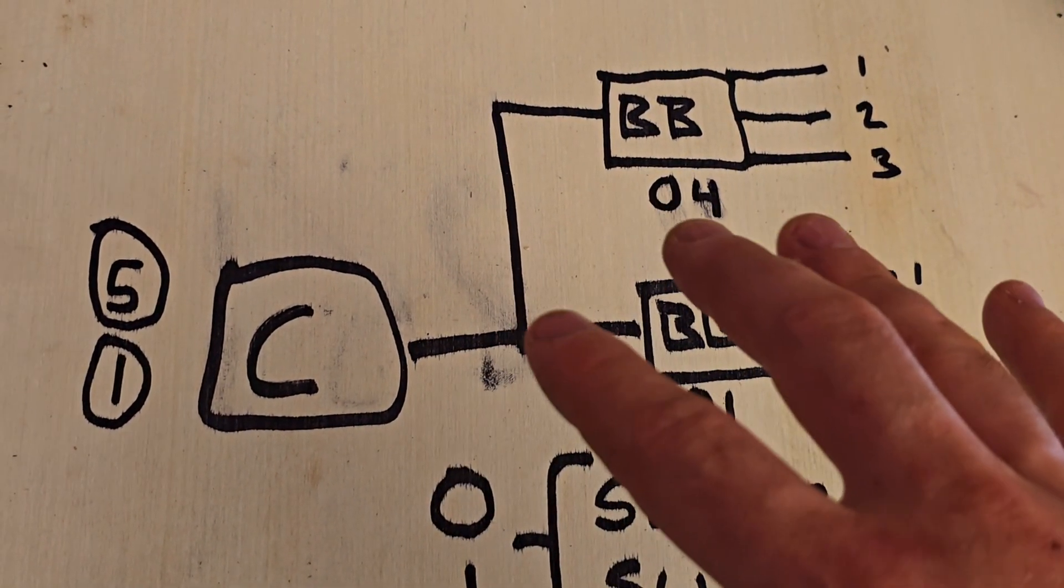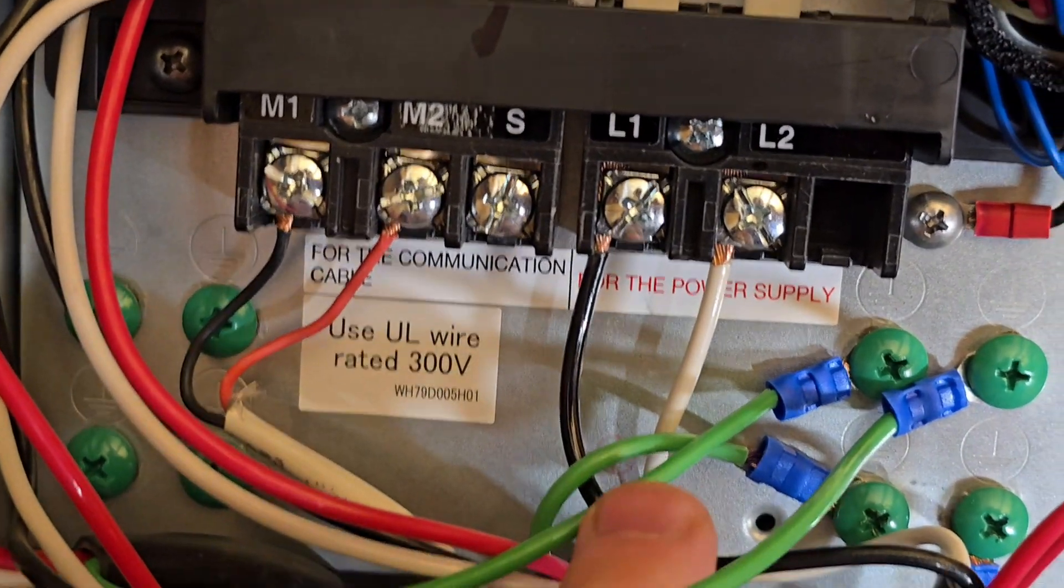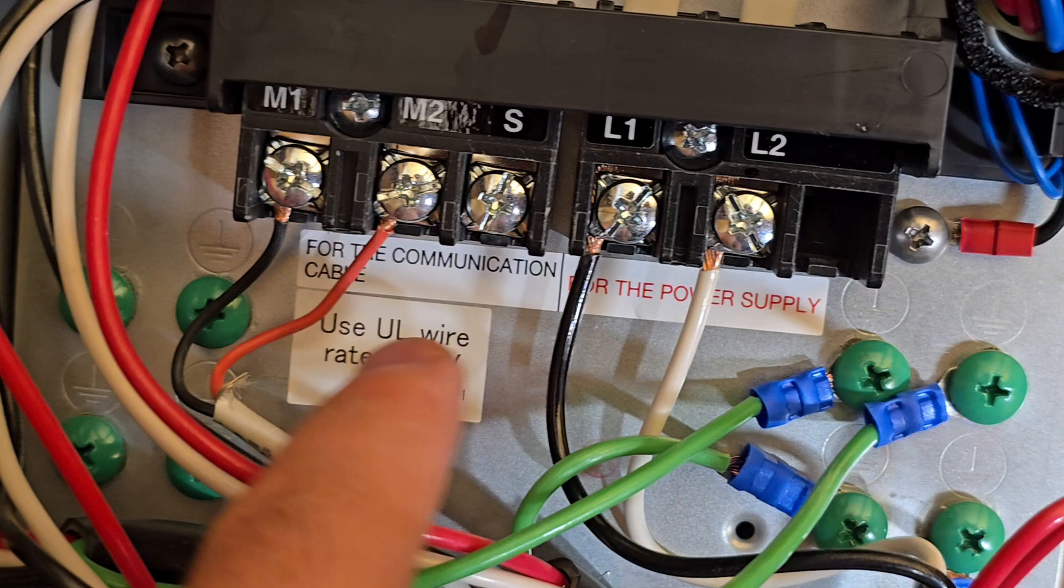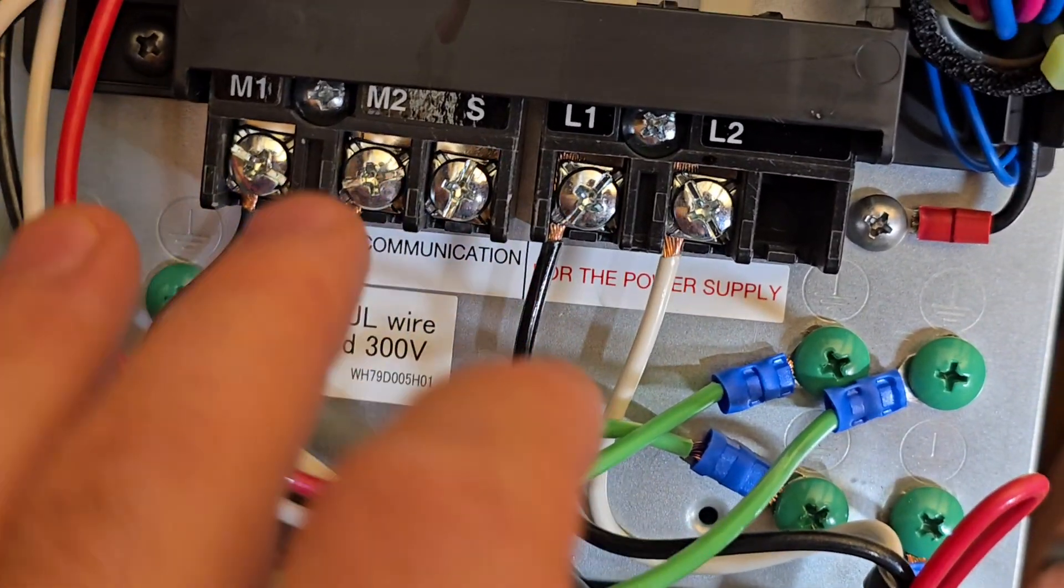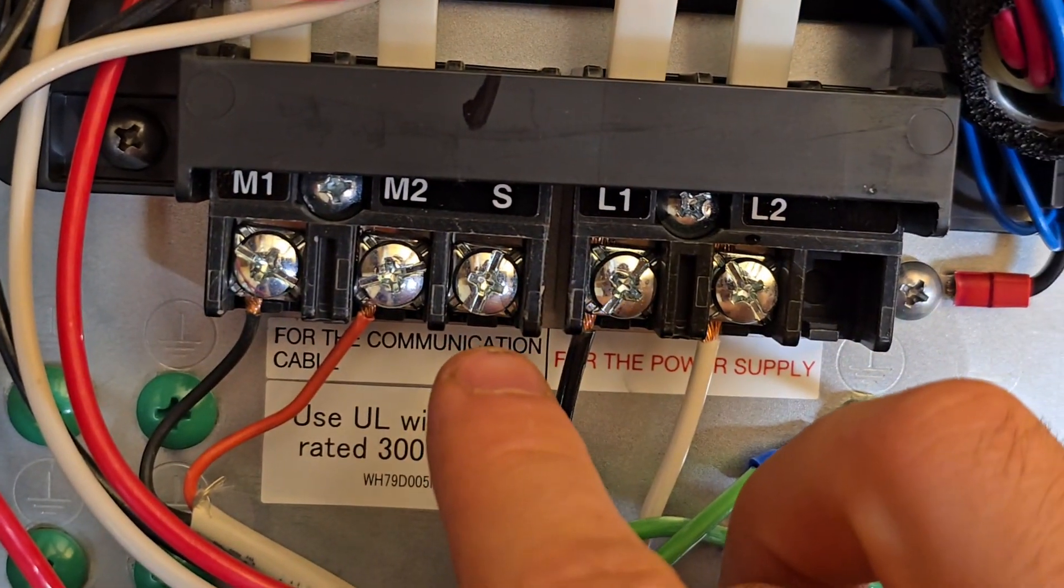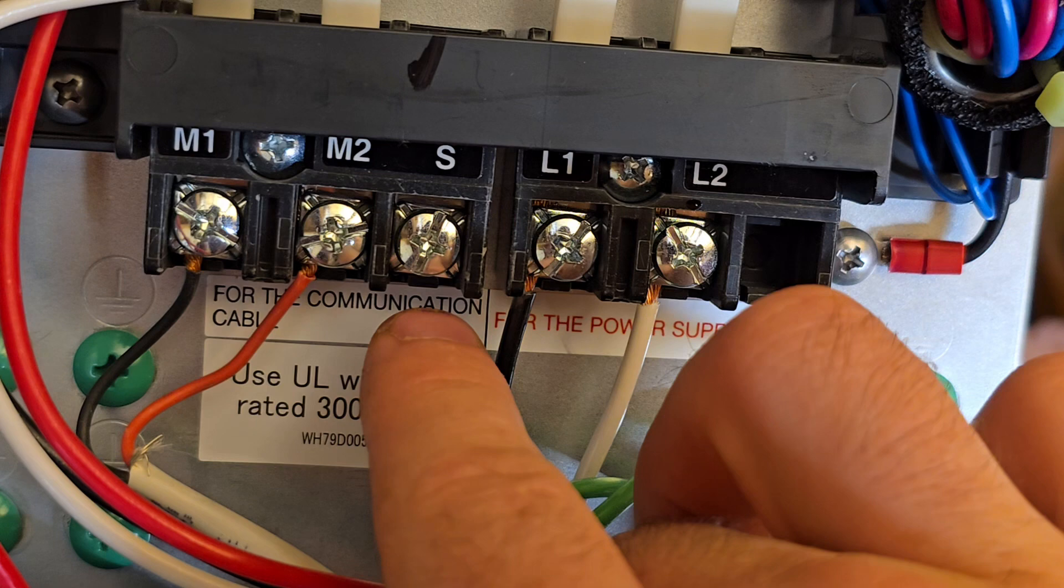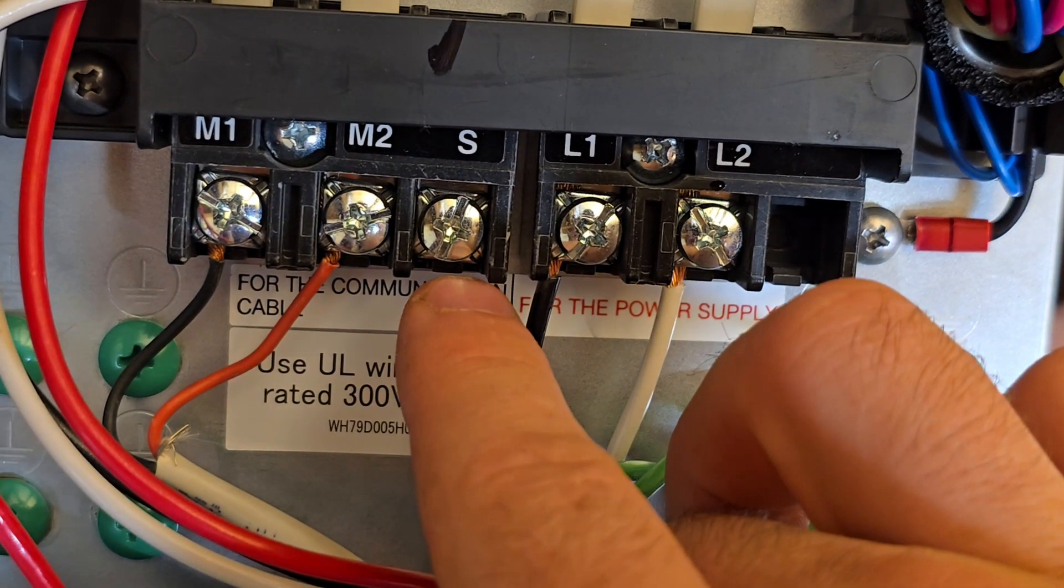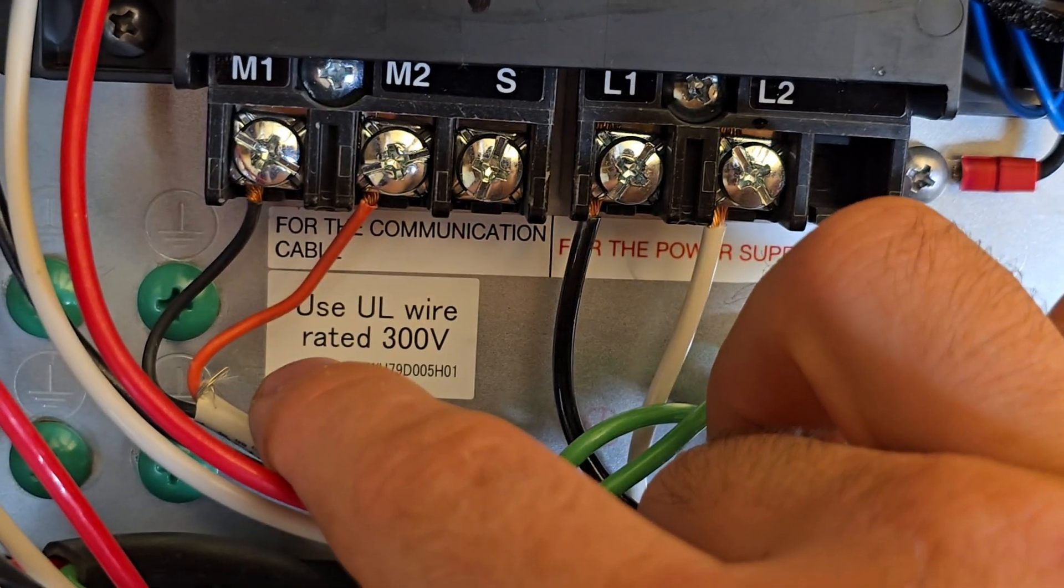All right, one last thing I wanted to mention. I've seen a couple people have these hooked up – this is your communications cable – and then you have your shield hooked up to both ends, and that is wrong. What you should do is have your shield hooked up to either your compressor or your branch box, one or the other. If you hook them both up, what can happen is you create a ground feedback loop, and it basically acts like a large radio antenna and can cause some electrical interference.